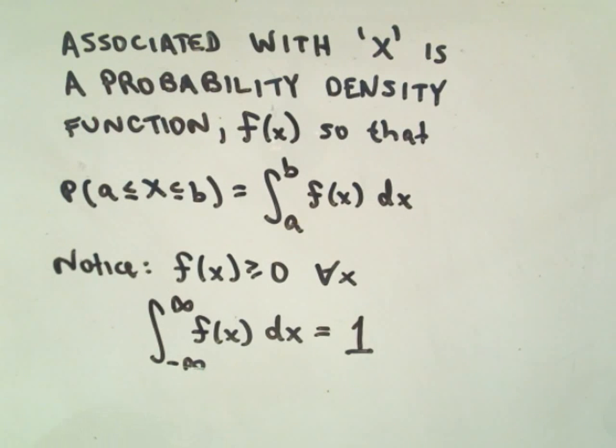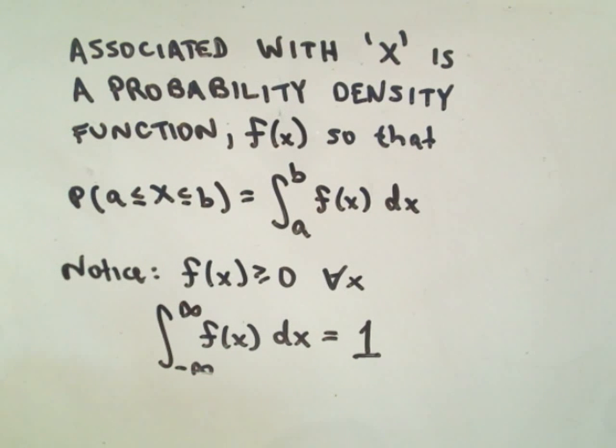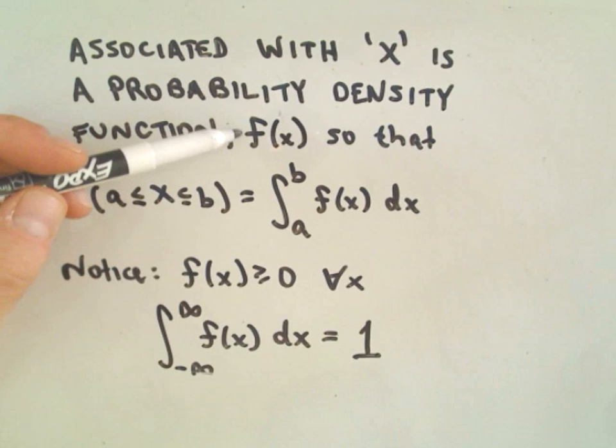The important thing is associated with this continuous random variable, which is often denoted with a capital X, is what's called a probability density function and it's denoted f of x.